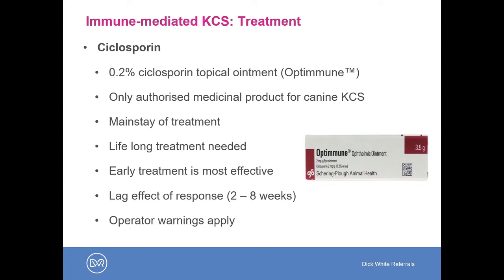In the UK, cyclosporine is the only authorized medication for canine dry eye, available as 0.2% ointment in Optimmune, and is the mainstay of treatment for the vast majority of dogs with KCS. Lifelong treatment is needed, and treatment is most effective when started early. Animals with nil tear production — who may have no functional lacrimal tissue left — are at higher risk of not responding. This is why it's really important to pick up early signs of dry eye and implement therapy quickly. There can be a lag of effective treatment — it can start working within two weeks, but can take up to eight weeks to have maximum effect.